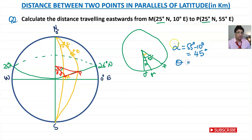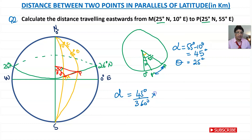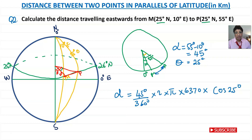I'm not going to repeat the formula — I want you to practice finding it. The distance equals 45 divided by 360, times 2 times pi, times the radius of the Earth — 6370 — times cos 25 degrees. If you work this out, d equals 4534 kilometers.